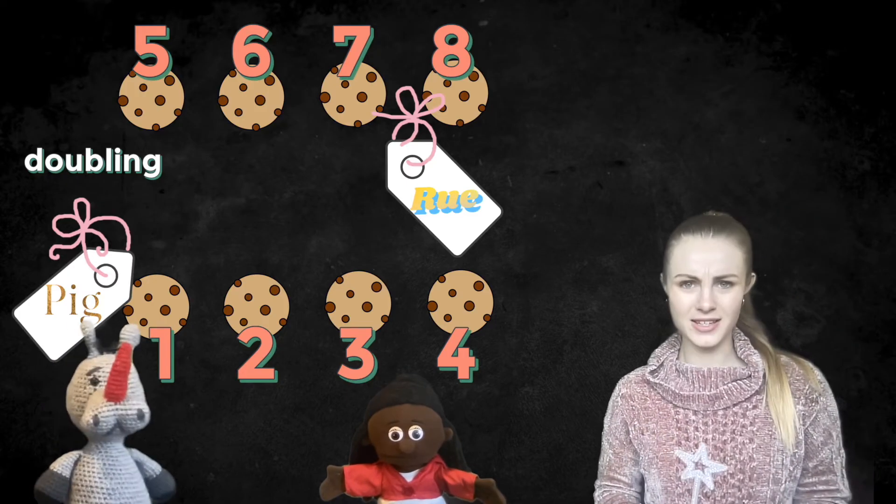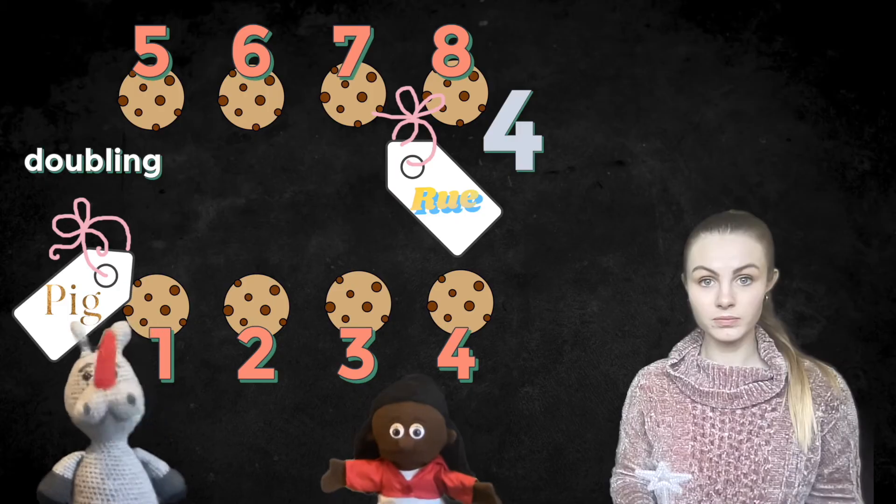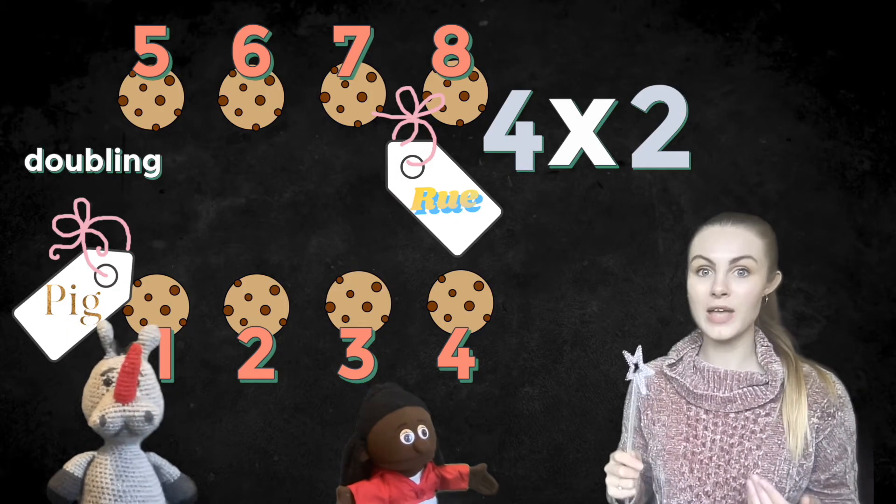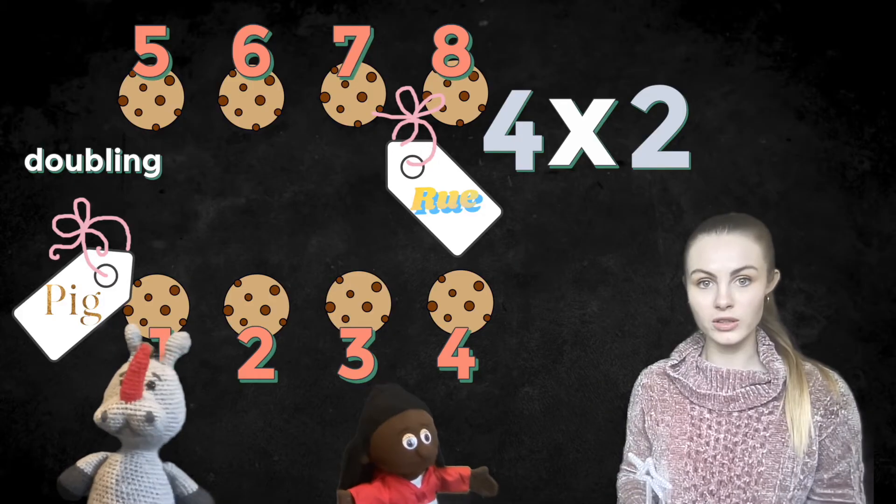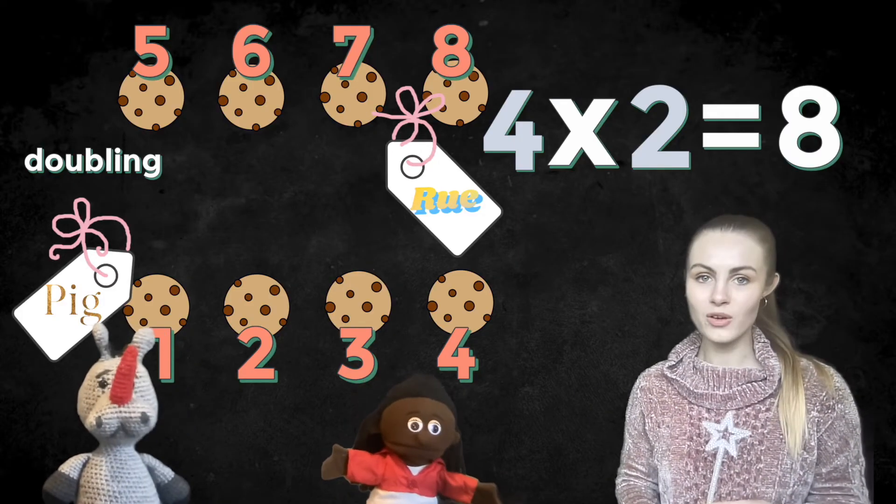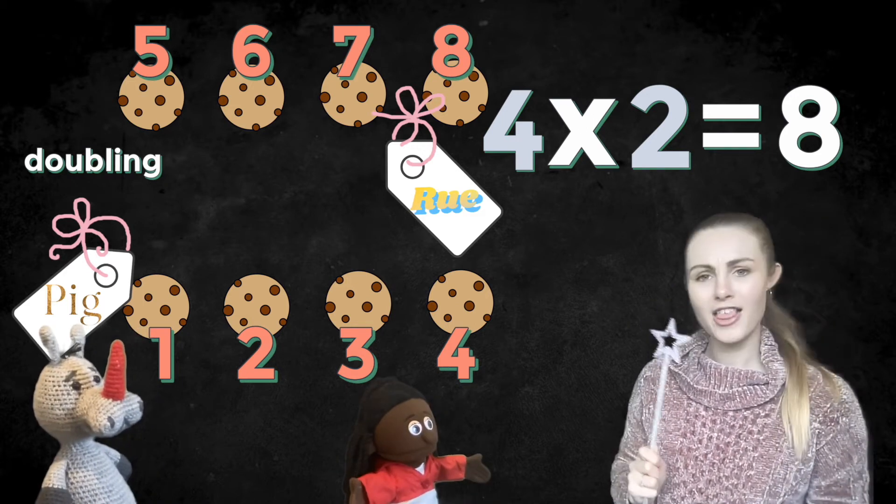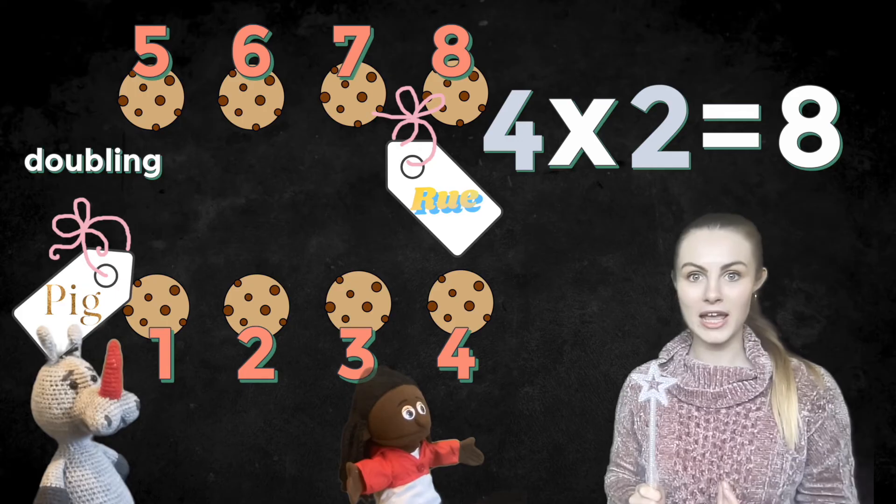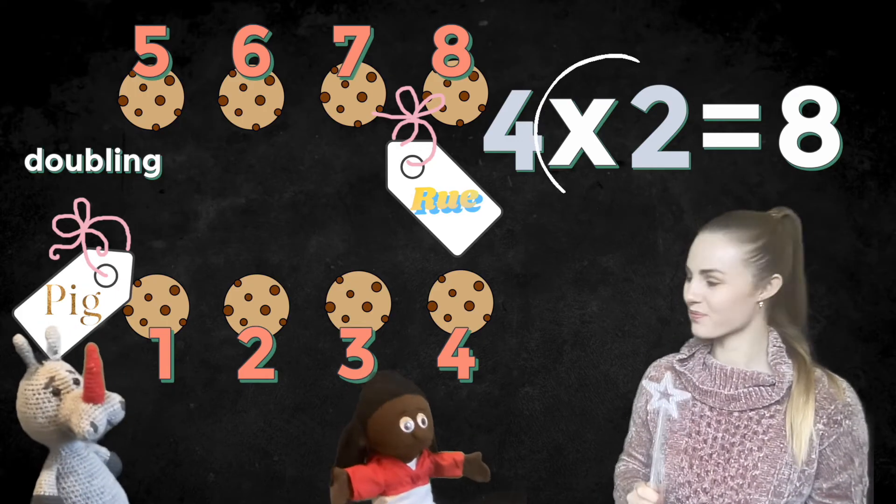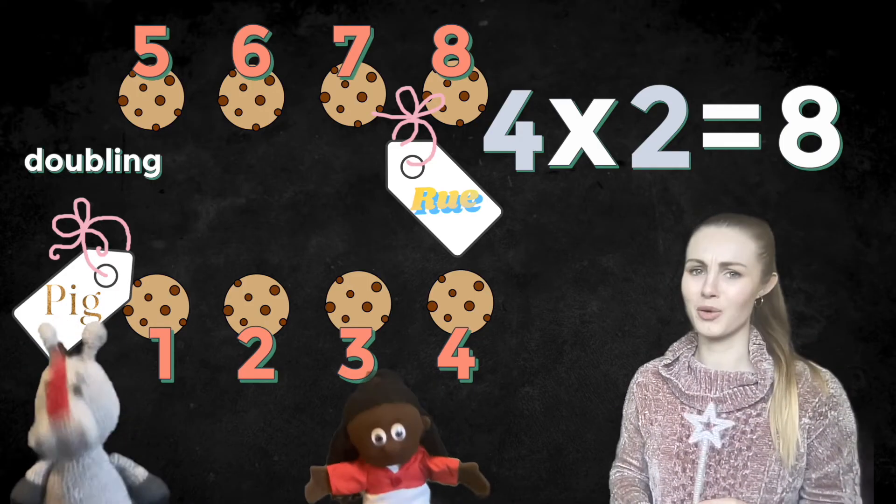How do we write that as a number sentence? Well, we started with four and then we multiplied by two because we ended up with two lots of four. And how many did we have all together? We had eight. So four times two equals eight. That must mean that doubling is the same as multiplying by two. They're looking much happier now. That should keep them quiet for a bit.